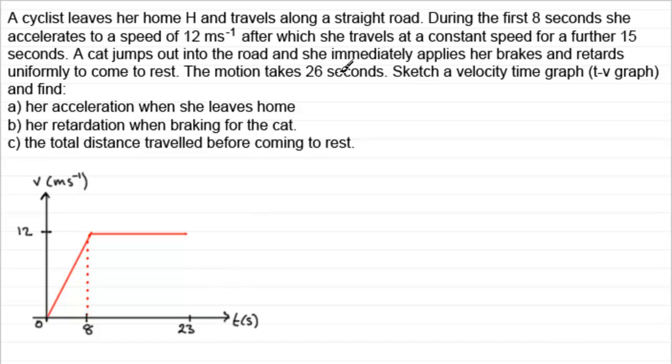Now, the whole motion takes 26 seconds. She sees this cat jump out, applies her brake so she's going to come to rest. She's going to retard or decelerate. So it's going to take a further 3 seconds. So let's just imagine that that's the further 3 seconds there, bringing this up to 26 seconds. So we would join from here back down to the 26.